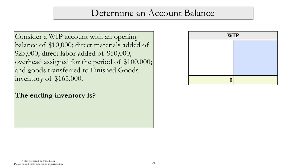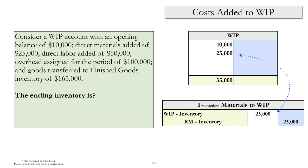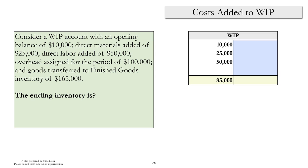Here's another example of essentially the same process, one that we often use in solving managerial accounting problems. We start with a beginning balance of $10,000, add direct materials of $25,000 — the journal entry is debit work-in-process, credit raw materials inventory — and then add labor of $50,000, with the credit typically to wages payable and other accounts.